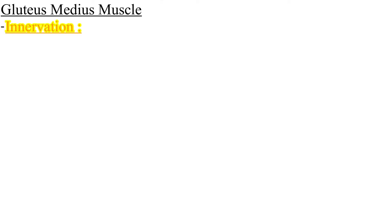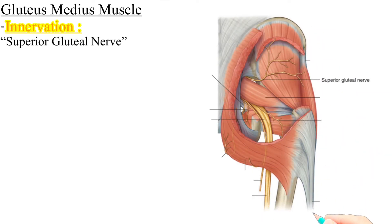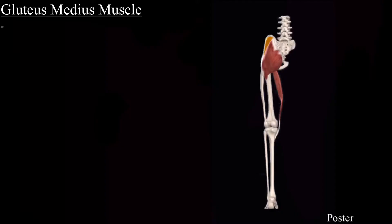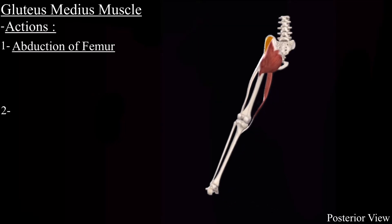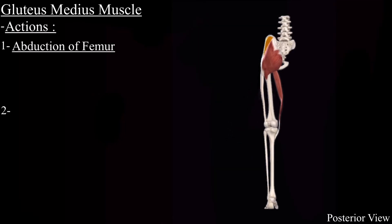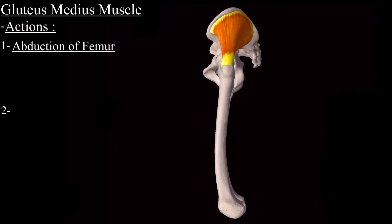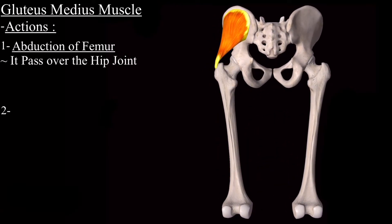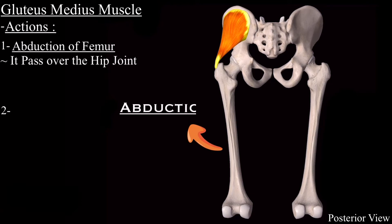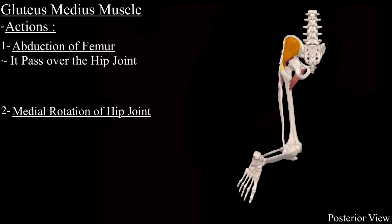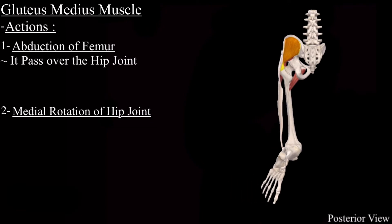The gluteus medius muscle is innervated by the superior gluteal nerve. There are two actions of the gluteus medius muscle. The first one is abduction of the femur at the hip joint, which makes sense because the gluteus medius muscle passes over the hip joint, and contraction of this muscle will cause abduction of the hip joint. The second one is medial rotation of the hip joint, which is the minor function of the gluteus medius muscle.